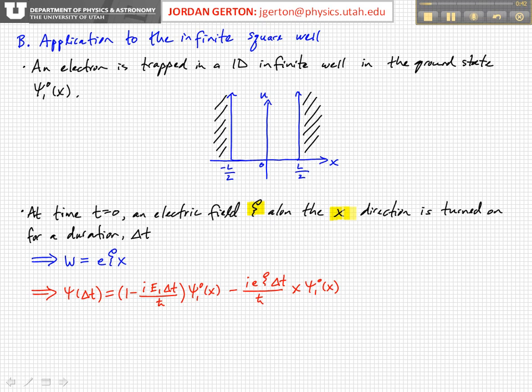And we turn that electric field on at time equals zero, and we keep it on for a duration delta T. So now we have our perturbation.